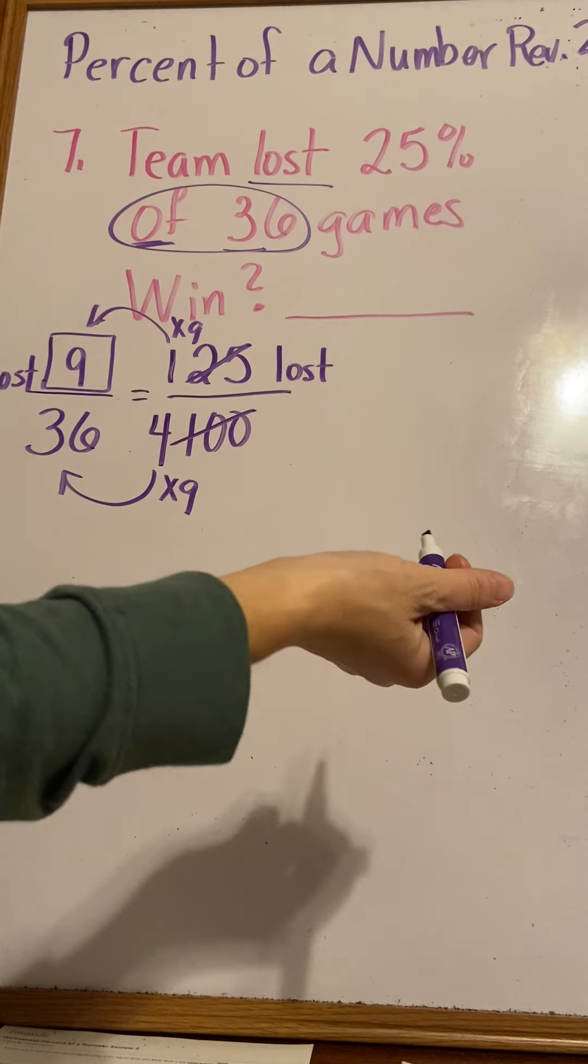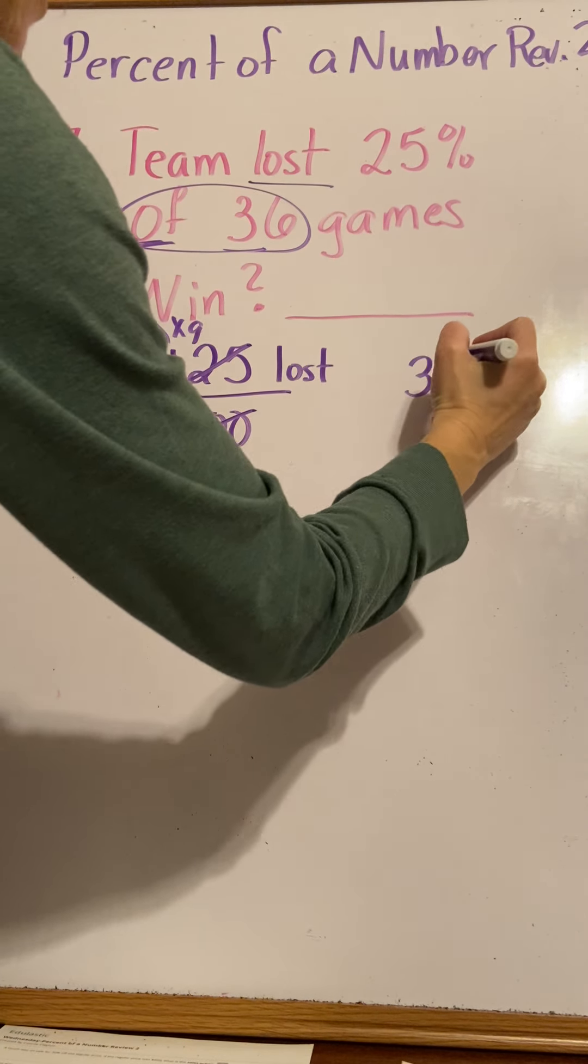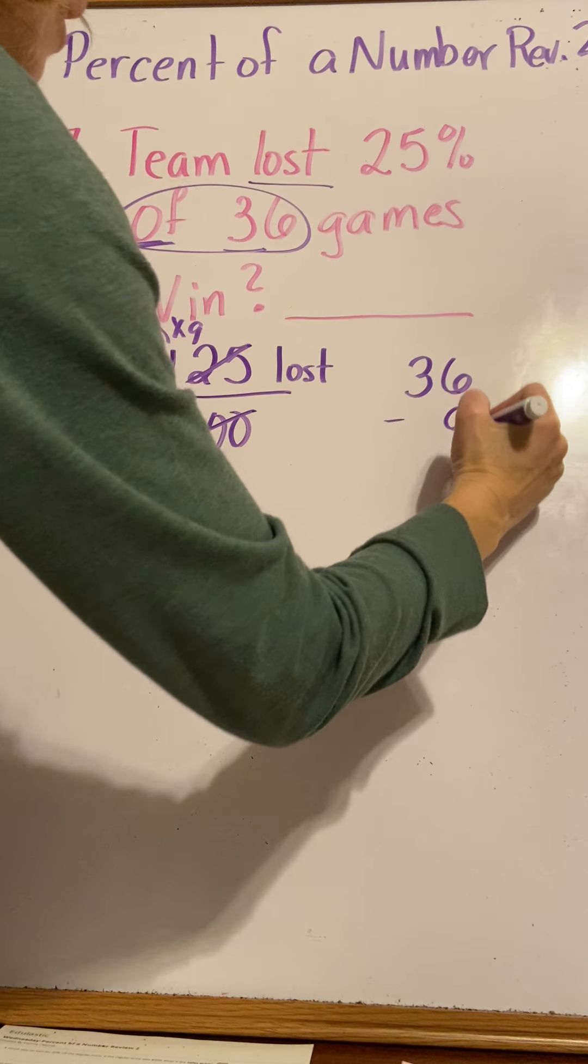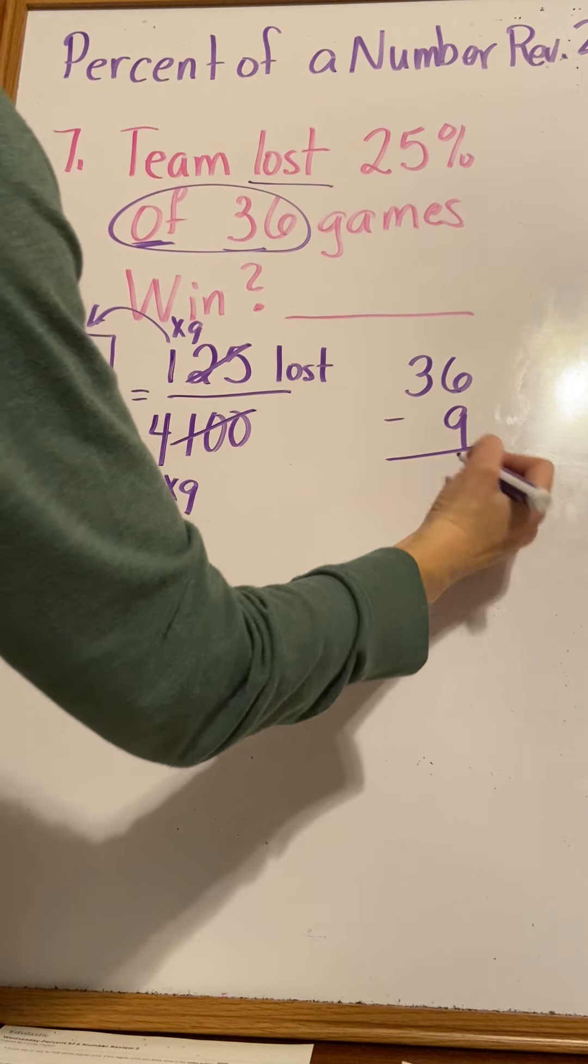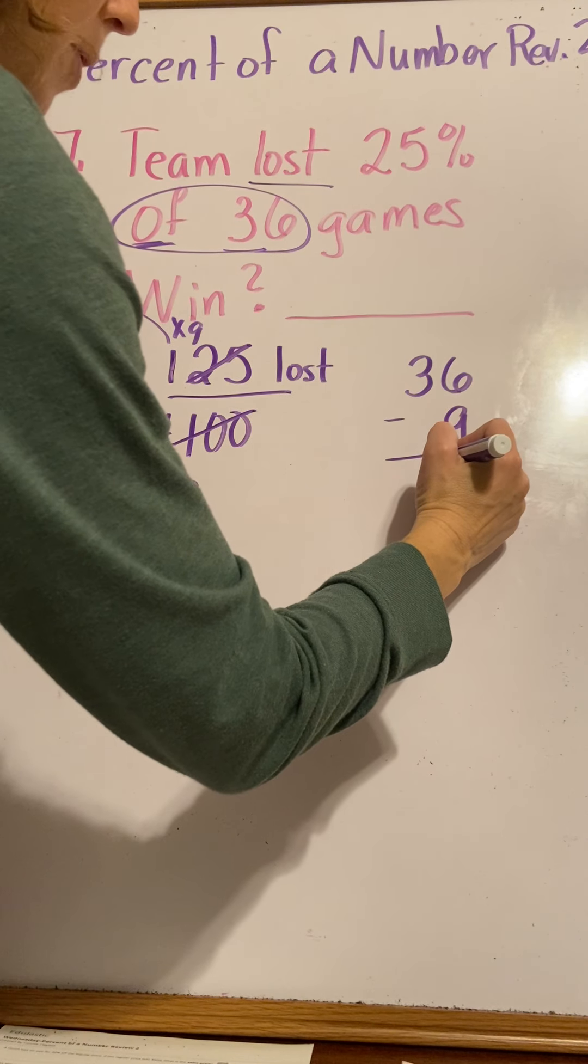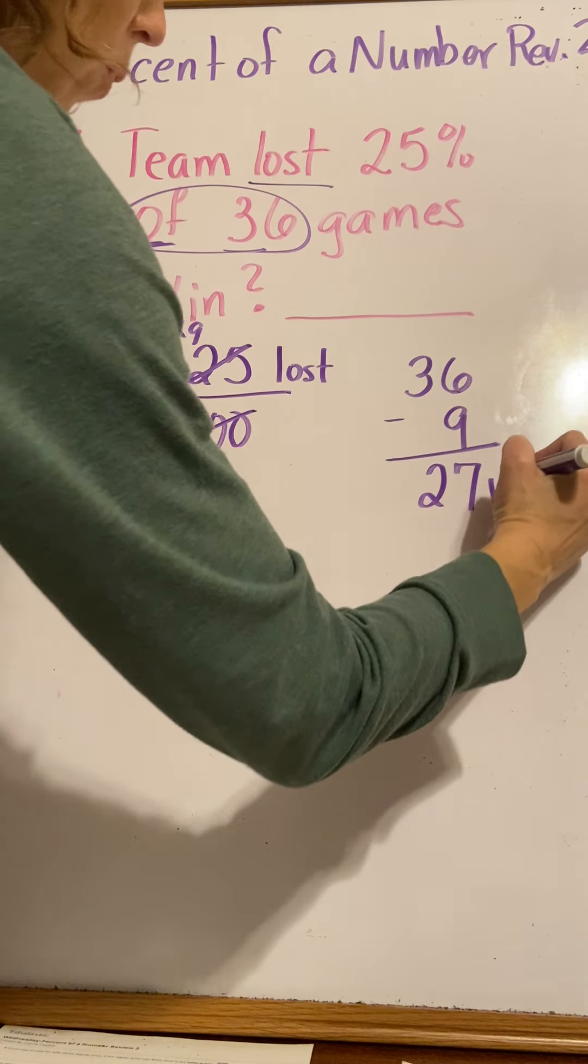How would I figure out how many they won? Well, I know that they played 36 games but they lost 9 games. That means they won the rest of them, which would be 27 wins. That's one way to work that problem out.